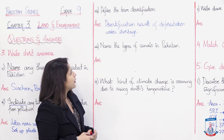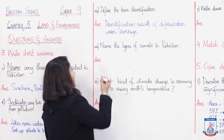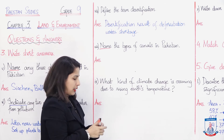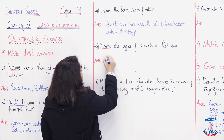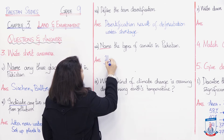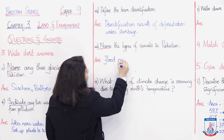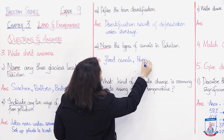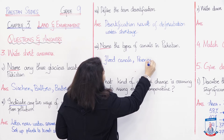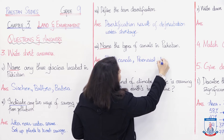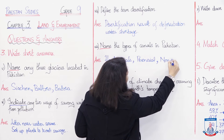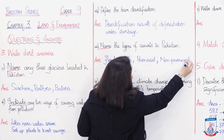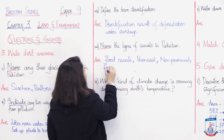The next question is: Name the types of canals in Pakistan. We have to name the canals of Pakistan. Excellent — flood canals, then perennial canals, then non-perennial canals, and at the end we have link canals.